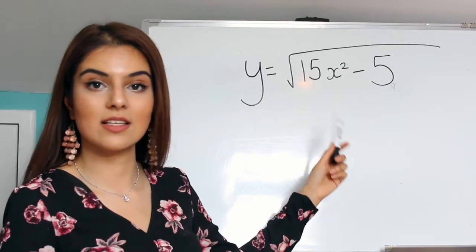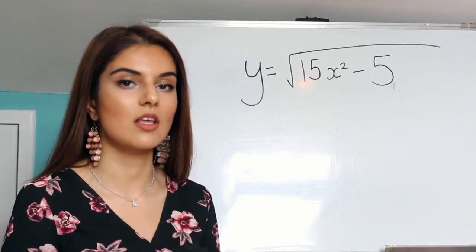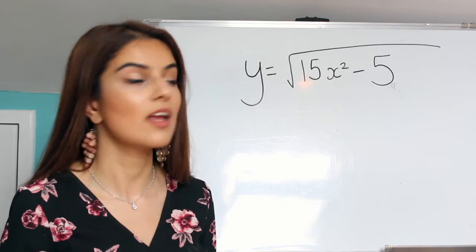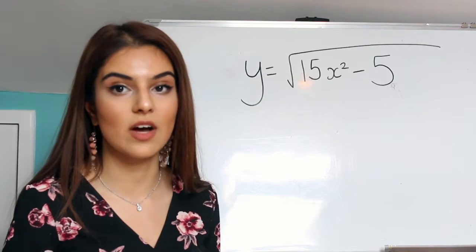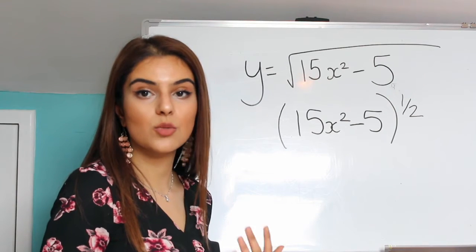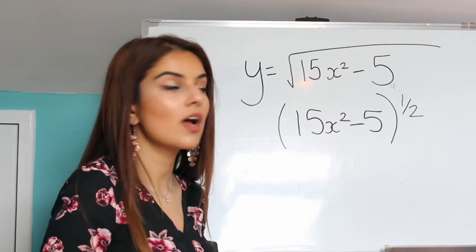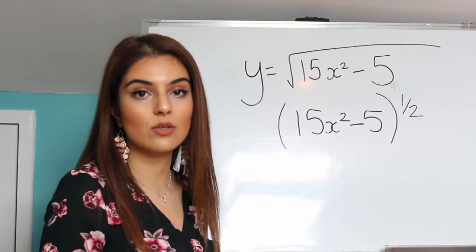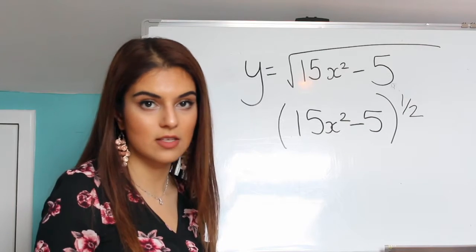So what we see is a function of two compositions. The outer function would be the square root and the inner function would be the 15x squared minus 5. So using the same principles again, we would change it into a more manageable form which is 15x squared minus 5 to the power of a half.